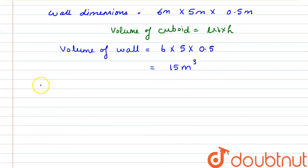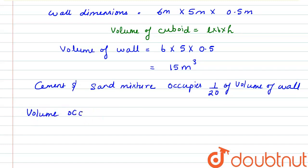Now it is given in the question that cement and sand mixture occupies 1 by 20 of volume of wall. That means the volume occupied by the bricks would be 1 minus 1 by 20. That will be 19 by 20. And the volume is 19 by 20 multiplied by 15 meter cubed.